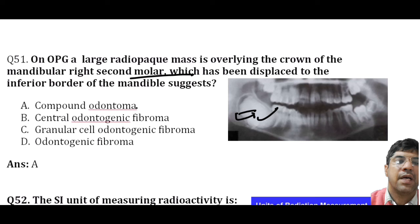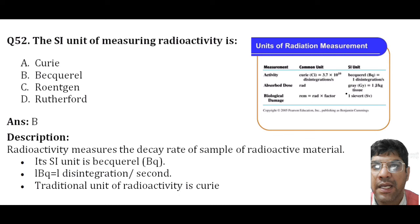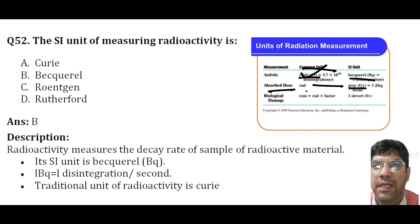The SI unit for measuring radioactivity is the Becquerel, while the common unit is the Curie. For absorbed dose, the SI unit is the Gray and the common unit is the Rad.